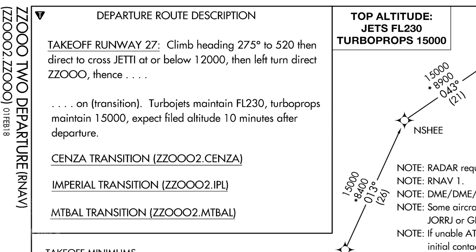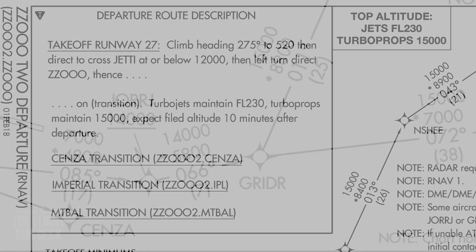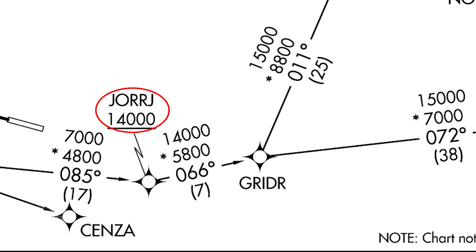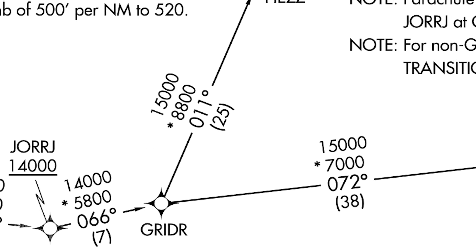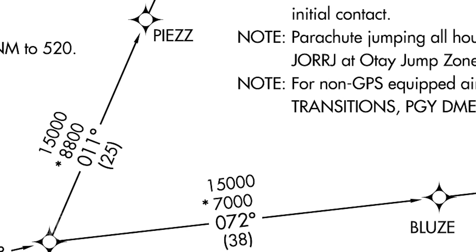This altitude hold won't be for long as we'll eventually be cleared up to our filed altitude. If our transition is Imperial or Mont Baldy, instead of flying to SENZA we'll proceed to GEORGE at 14,000 feet heading 085, and from there fly a heading of 066 to GRINDER. At this point you're connected with the other two transition options for the SID — heading 072 will put you on the route for the IPL transition and heading 011 will put you on the Mount Baldy transition.